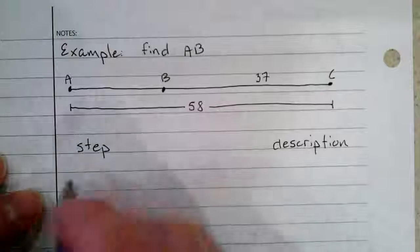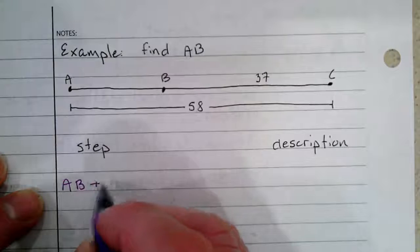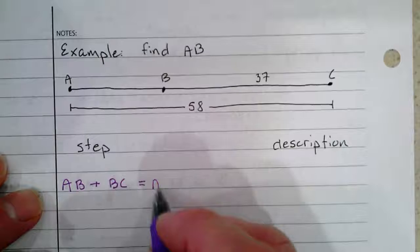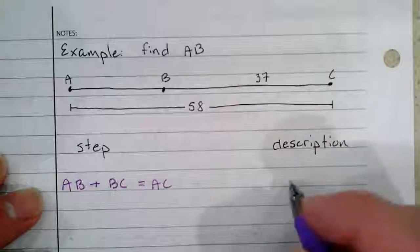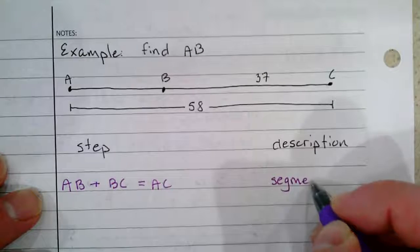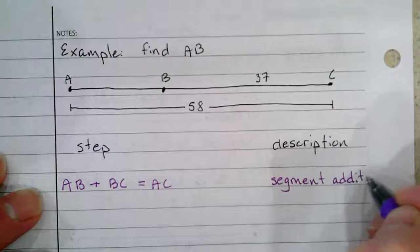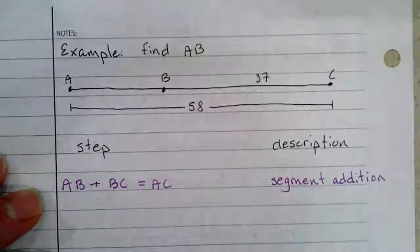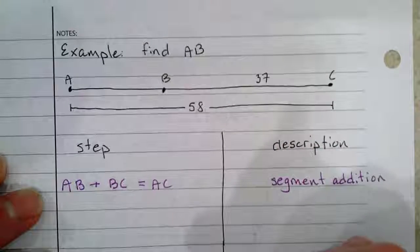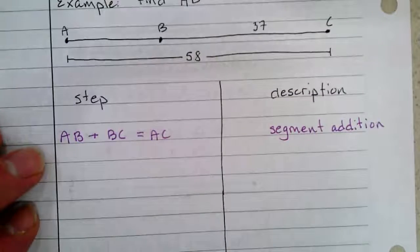All right, so first we've got AB plus BC equals AC, and that's just the segment addition postulate based on our diagram.